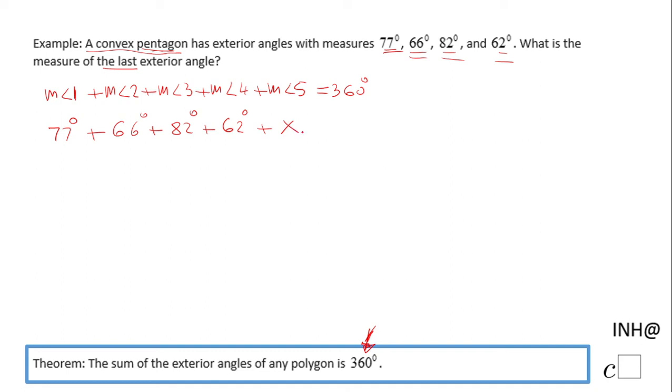You can keep it like that or if you want to call it x, that's fine if it makes more sense for you—equals 360°. Now we need to add the four exterior angles: 77 plus 66 plus 82 plus 62, and that will be 287.